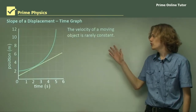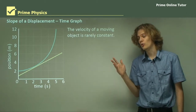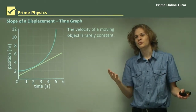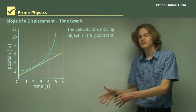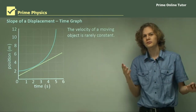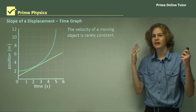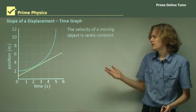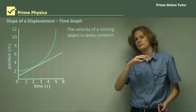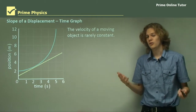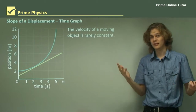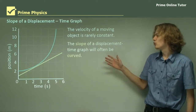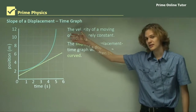Now, the velocity of an object is rarely constant in the real world. So you'll never get straight lines — there will always be curves, never any sharp angles. Of course, in theoretical physics we can use straight lines everywhere just to make things simpler. But in the real world, that's never the case. So the slope of a displacement time graph will often be curved, as we can see here.